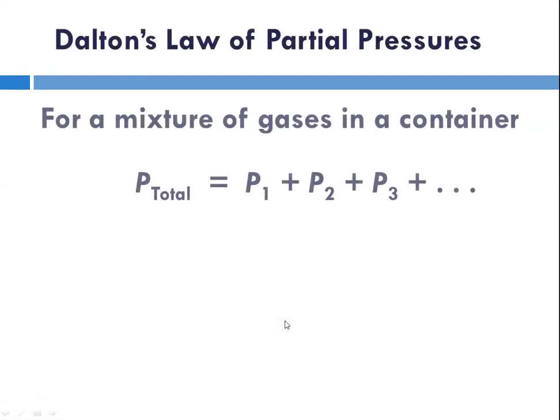Dalton's law of partial pressures states that for a mixture of gases in a container, the total pressure is the sum of all the partial pressures of each of the gases involved.